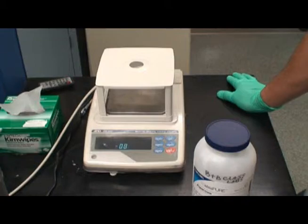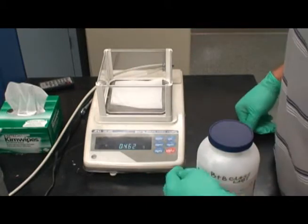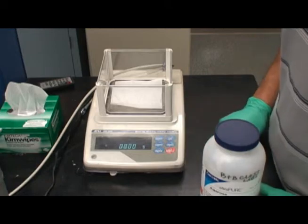Using the balance, measure out precisely 1 gram of agarose. Too much or too little agarose will result in poor gel electrophoresis. A creased kimwipe can be used as a plate for the agarose. Remember to zero the scale after placing the kimwipe on it.